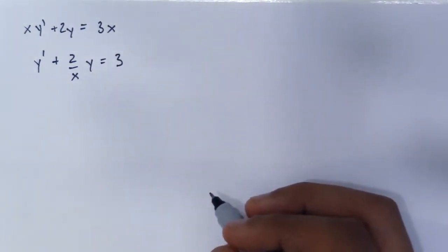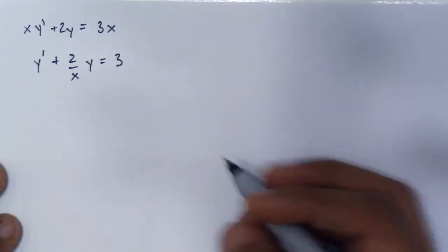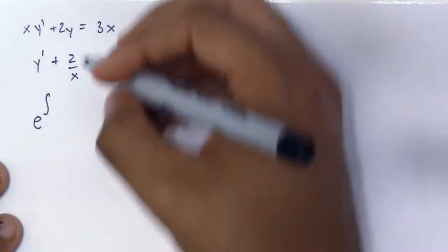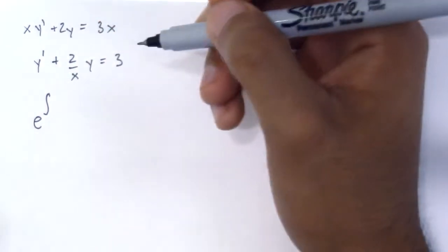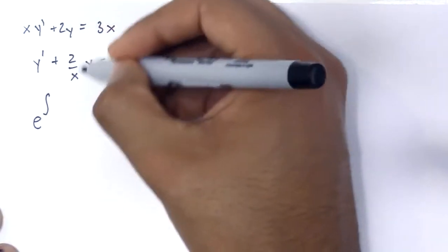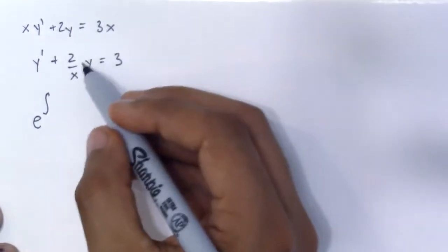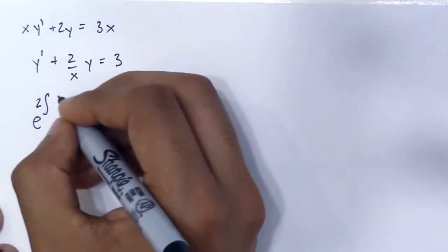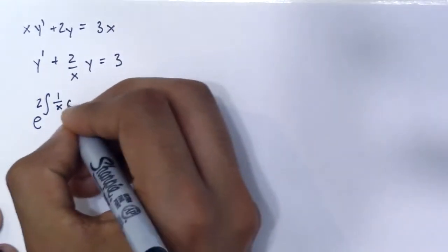Now an integrating factor is a factor that exists such as you take the integral, e to the integral. I know it looks kind of scary, but you take the integral of this part of the equation, whatever's in front of the y. So you get 2, you get 1 over x dx.